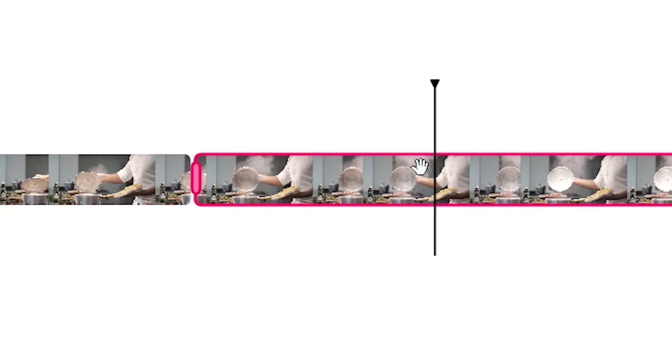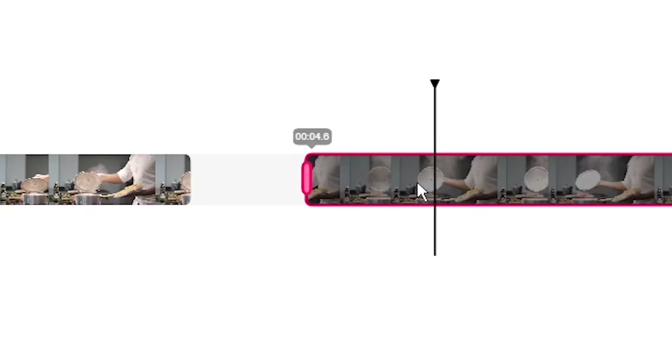Hey everyone, Alec here with Veed. In this video I'm going to be showing you how to cut out parts of a video. So let's say you filmed a clip and there's a bit of that clip that you want to remove from the middle — you want to slice it in two areas, take out the bit from the middle, and put the two remaining clips back together. This is exactly what I'm going to be showing you right now.